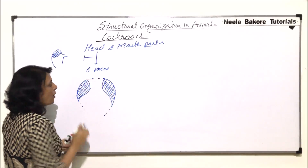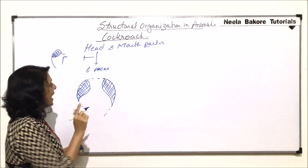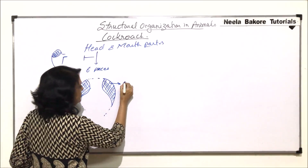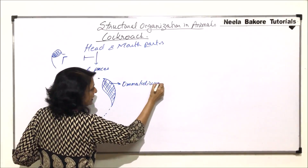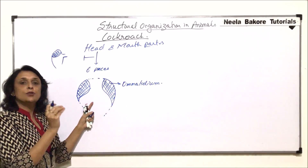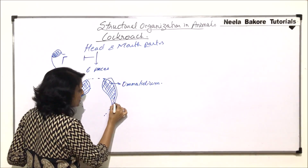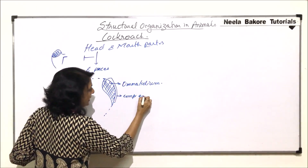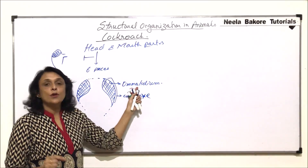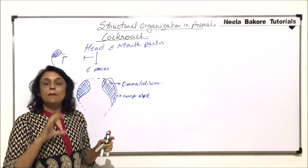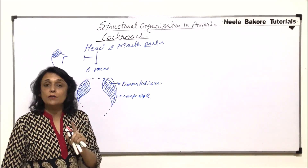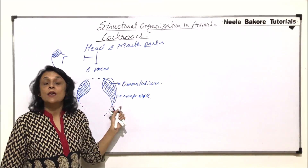Each compound eye is made up of many units, and each unit is known as one ommatidium. This is like a simple eye, and many such simple eyes are placed together. This entire structure is the compound eye. Each ommatidium makes a segment of the image, so the image is seen as smaller pieces joined together. Such an image is known as a mosaic image.